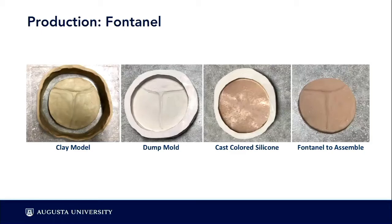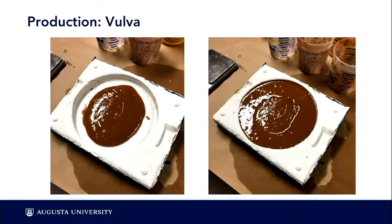I'm going to pass the Chavant clay around so you can feel it — I love this clay for very quick sculpts. You can smooth it with 99% alcohol. We built a wall around the clay model and poured plaster in to create a dump mold — a quick and easy mold-making process — then poured silicone into that shape to cast the fontanelle to insert in the model. The same process was used for the vulva model.